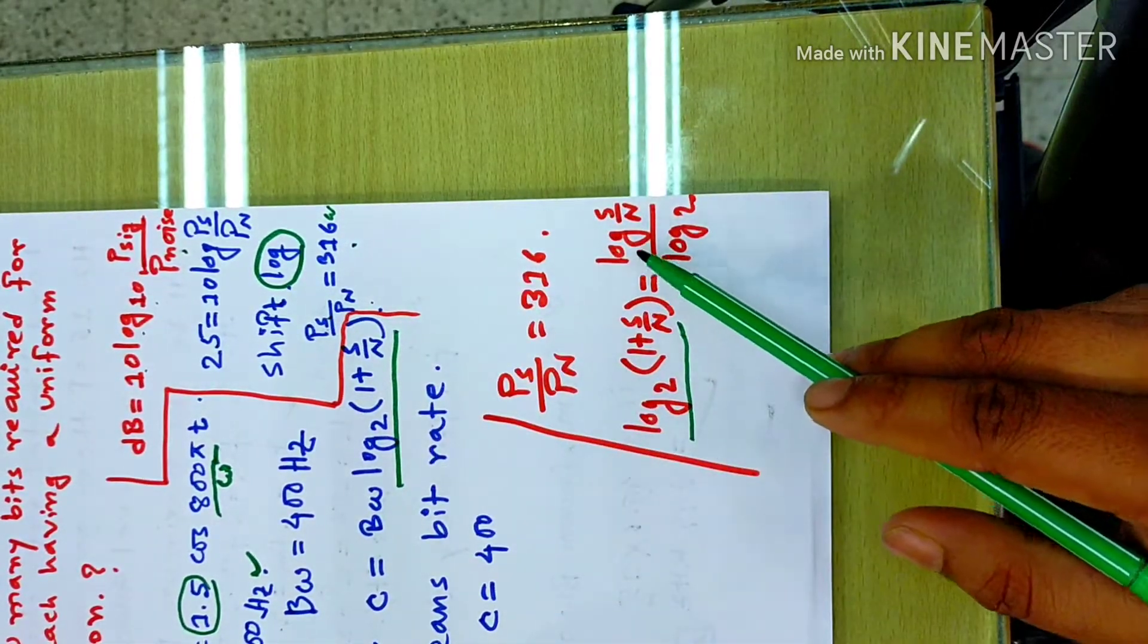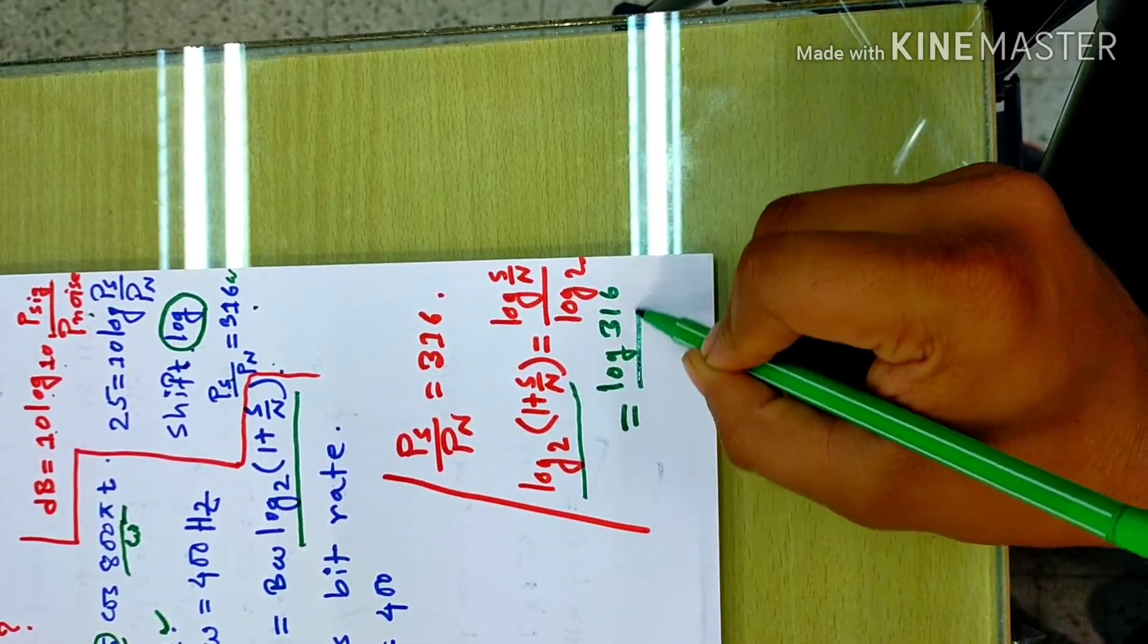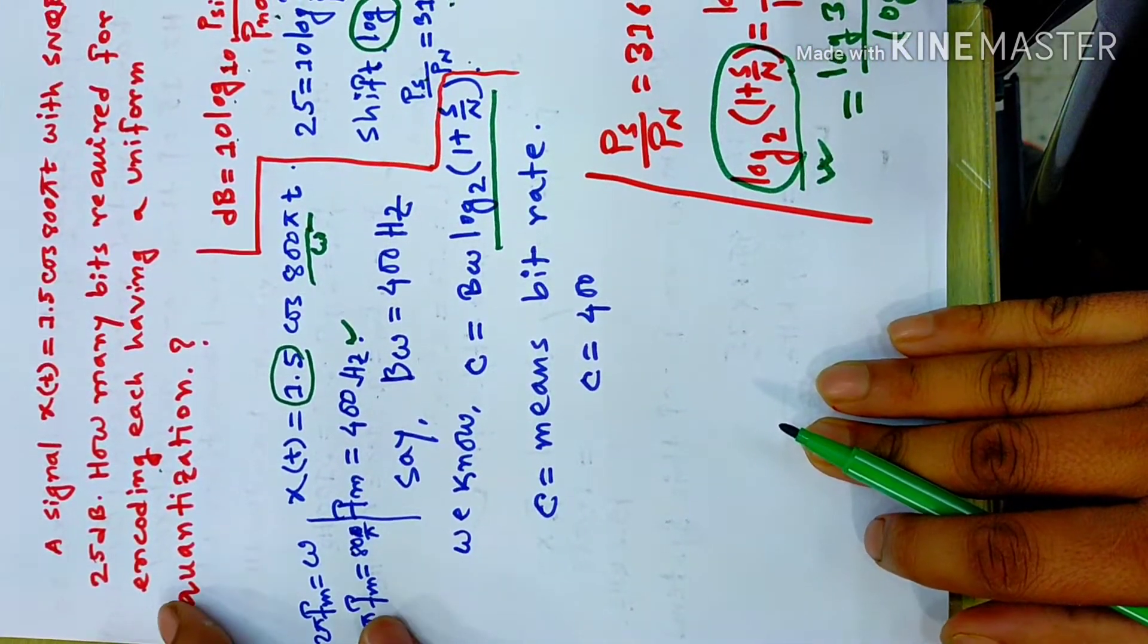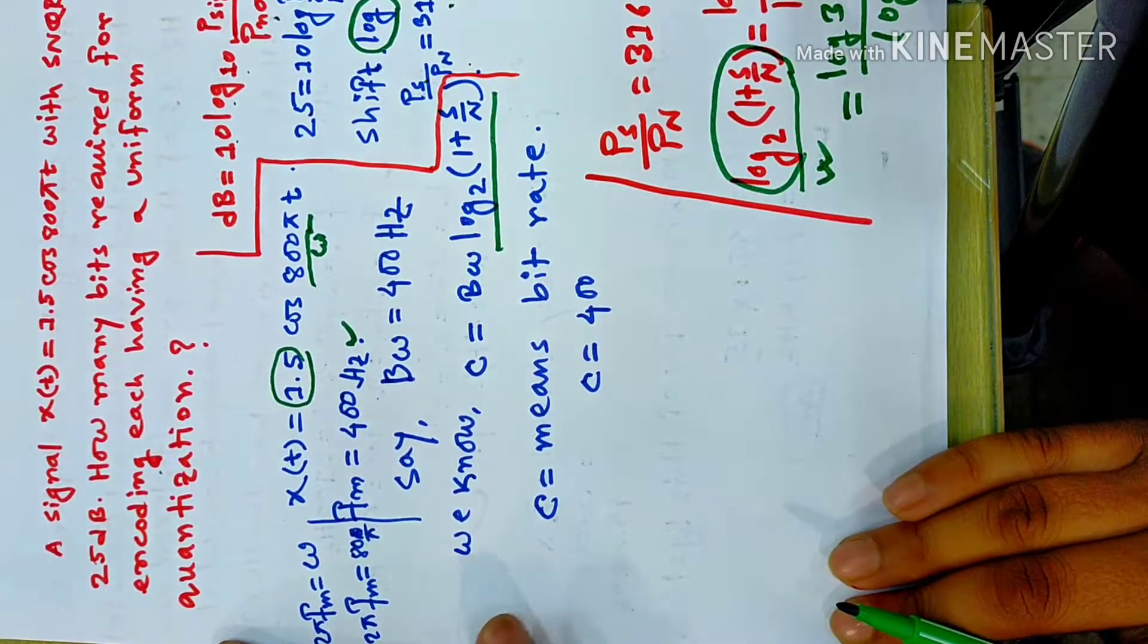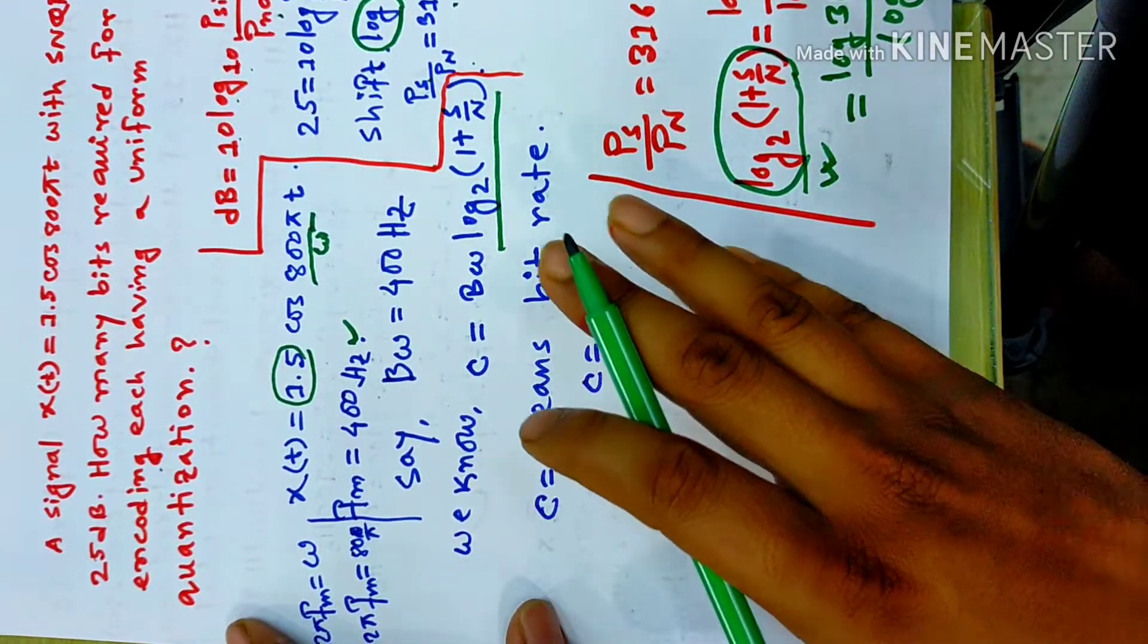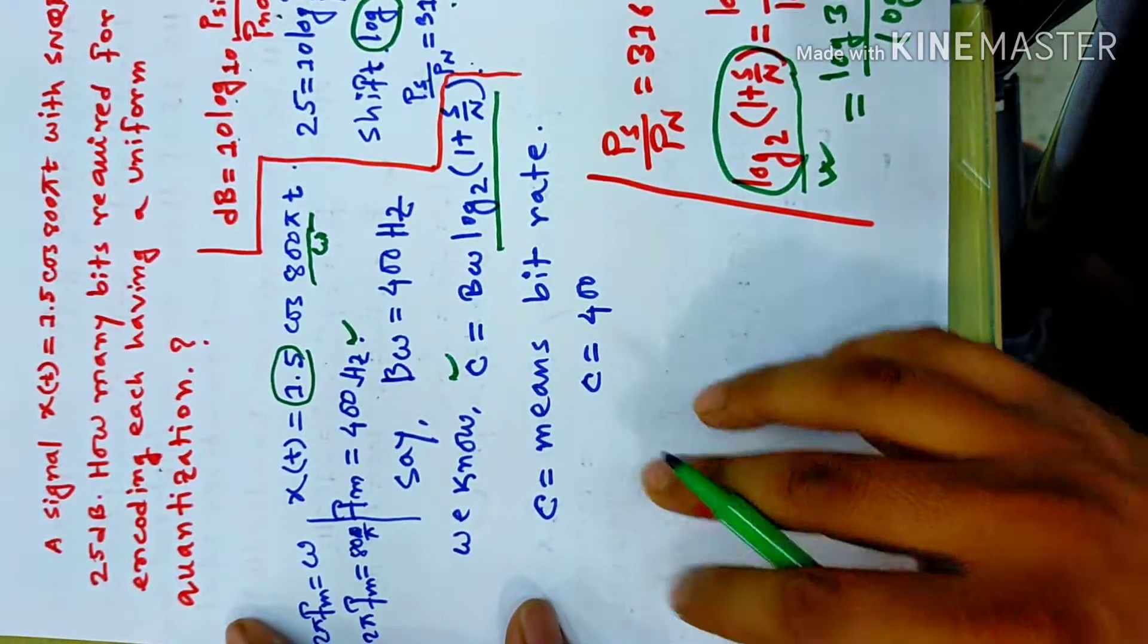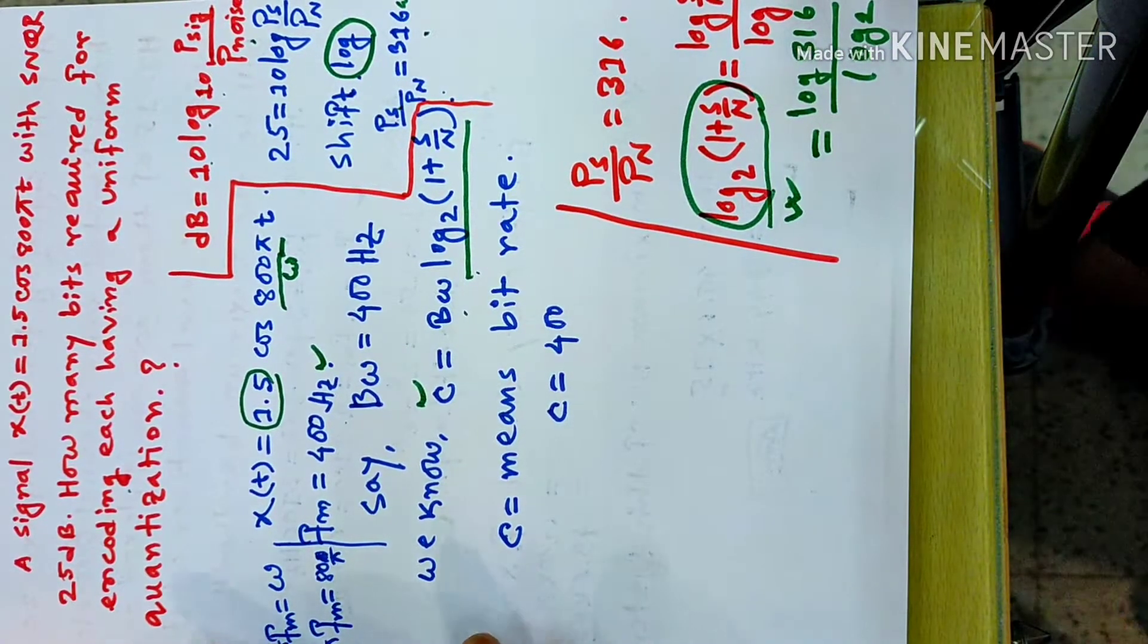The capacity goes to bandwidth into log₂(1 + SNR). This capacity is bit rate. It is called how many bits. This bit is indicated in the capacity. This is called bandwidth log₂(1 + SNR). So log₂(1 + SNR) is the amount. So that will be as far as possible.